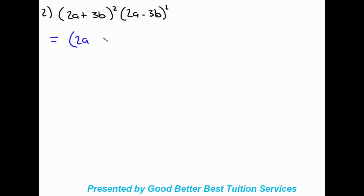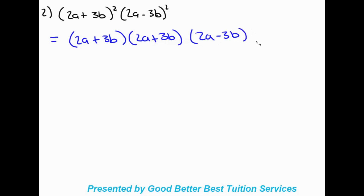Moving on to our next example: we have a binomial squared times a binomial squared. We have (2a + 3b) times (2a + 3b), multiplied by (2a − 3b) times (2a − 3b). We'll focus on multiplying the pairs first, then multiply the resulting brackets by each other.